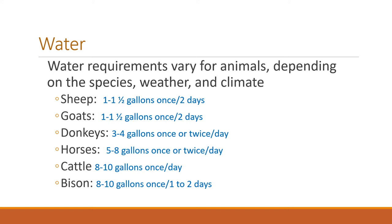Starting with some general numbers: sheep and goats drink one to one and a half gallons and can drink every other day. Donkeys and horses drink four to eight gallons depending on their weight and generally drink once or twice a day, making it hard for them to go more than a day without water. Cattle generally drink at least once a day — eight to ten gallons for a beef cow on the range. Bison of about the same weight also drink eight to ten gallons but are known to be able to drink every other day. The amount any of these animals drinks depends on their physiology and on weather and climate conditions.